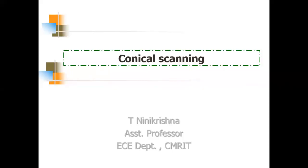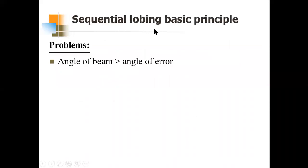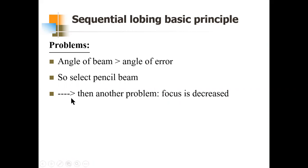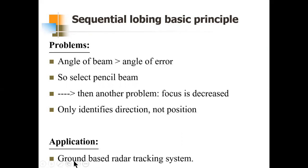In the previous video where I was explaining about sequential lobbing, I had also mentioned conical scanning and the main difference between them. The problems of sequential lobbing were: the angle of beam is greater than the angle of error, requiring a pencil beam — a very narrow beamwidth pattern. Also, focus is less because the single beam is switched between only four positions, so the focus is decreased. Another problem is it identifies the direction and not the position — only from which direction the target is coming, not the exact position. The application of sequential lobbing is ground-based radar tracking systems.